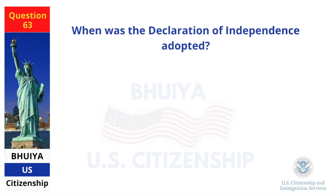When was the Declaration of Independence adopted? July 4, 1776.